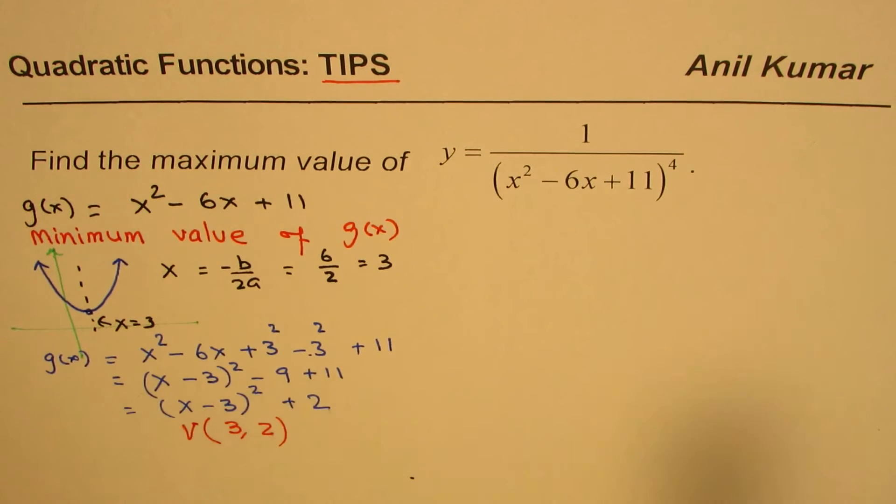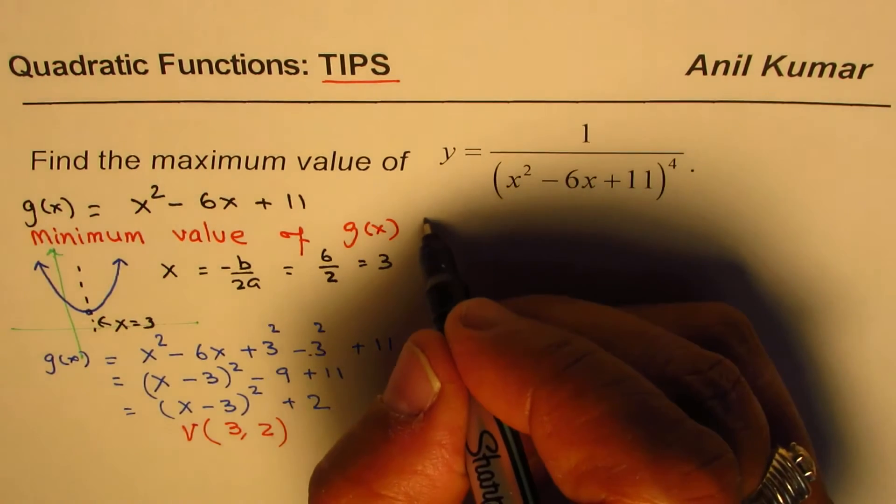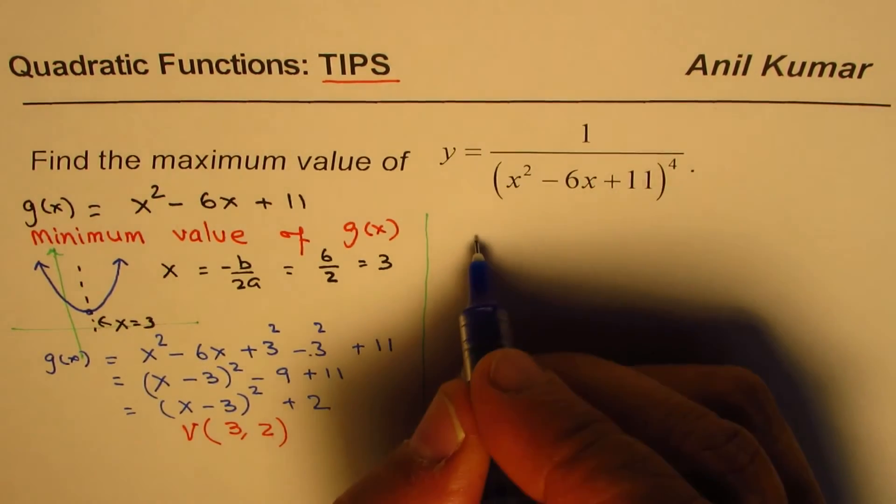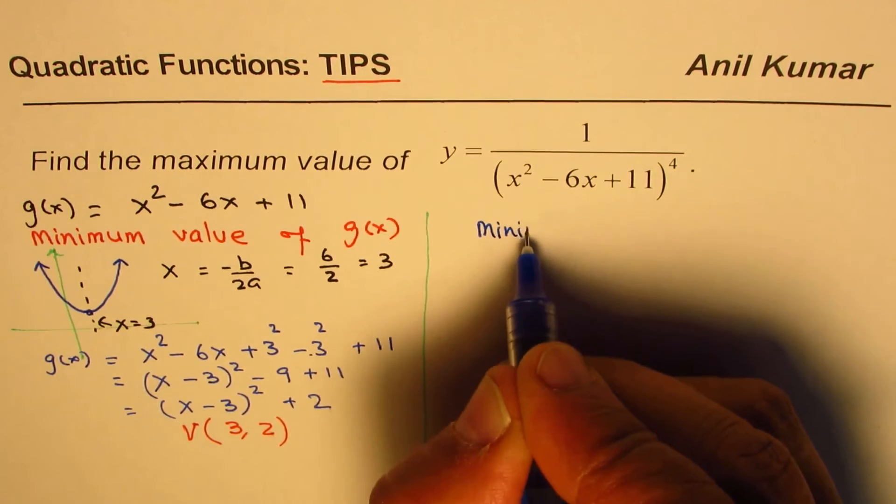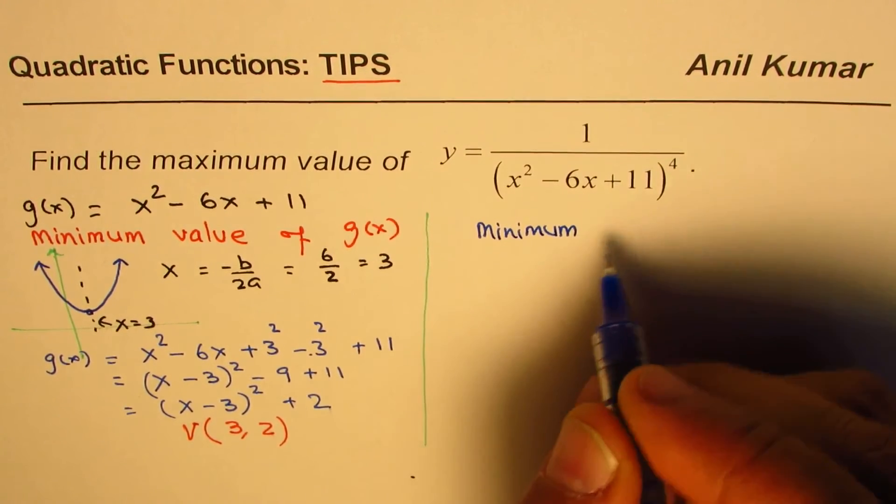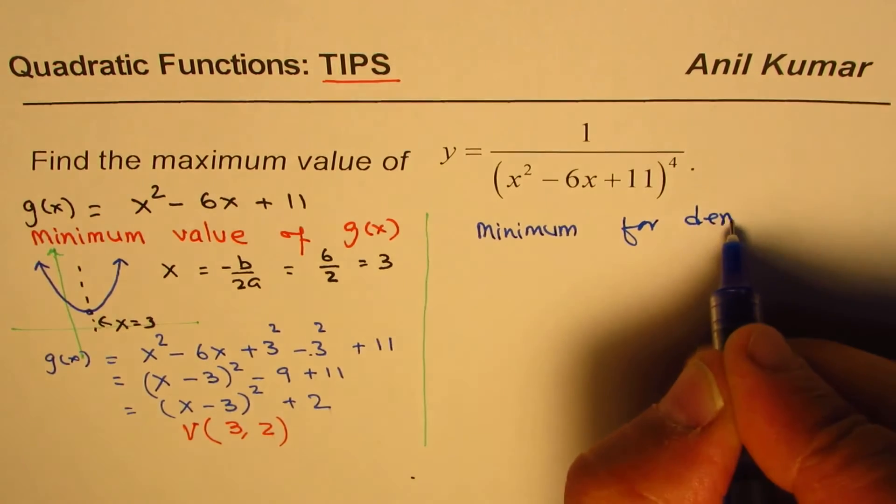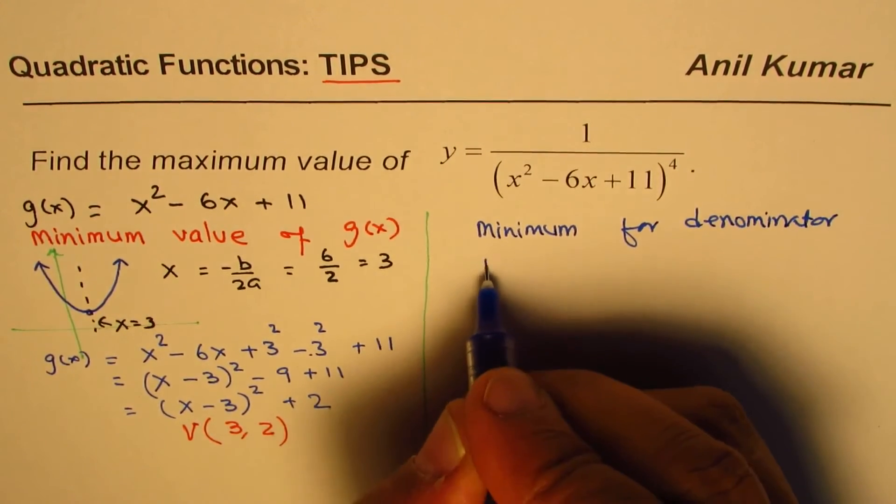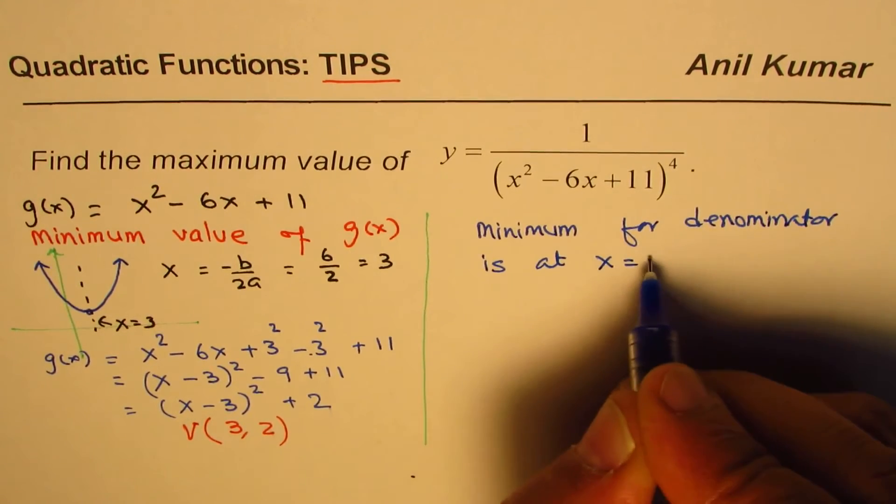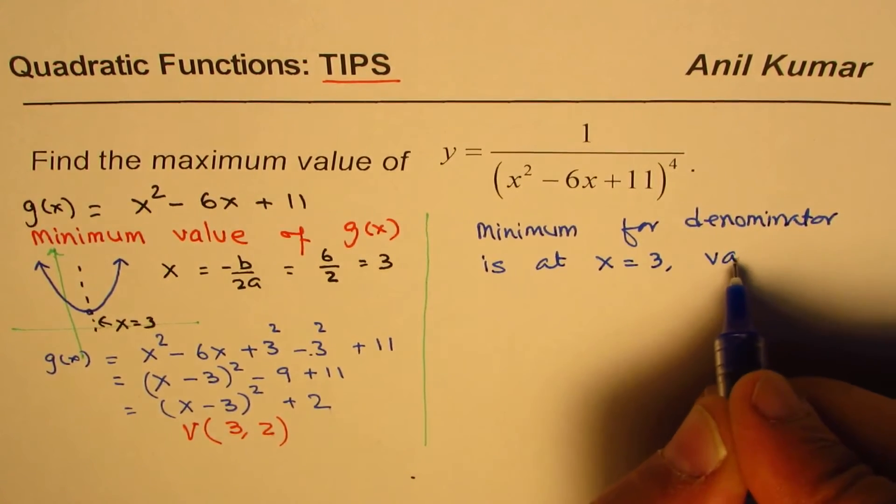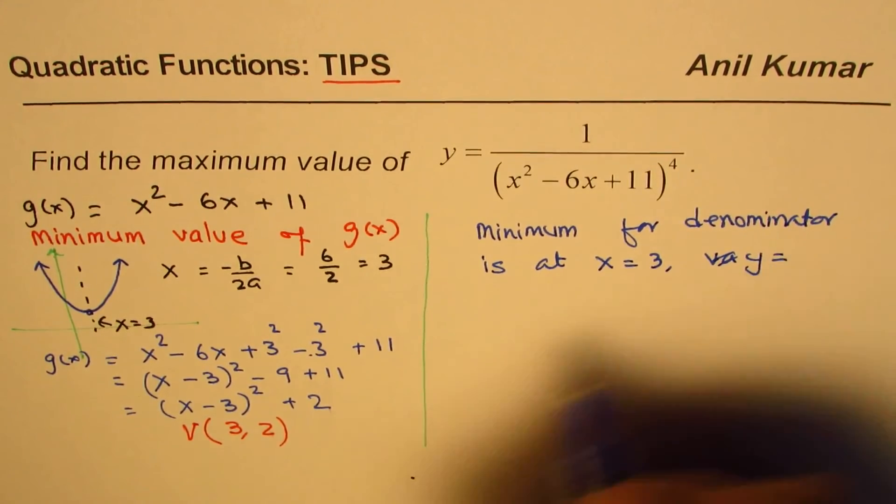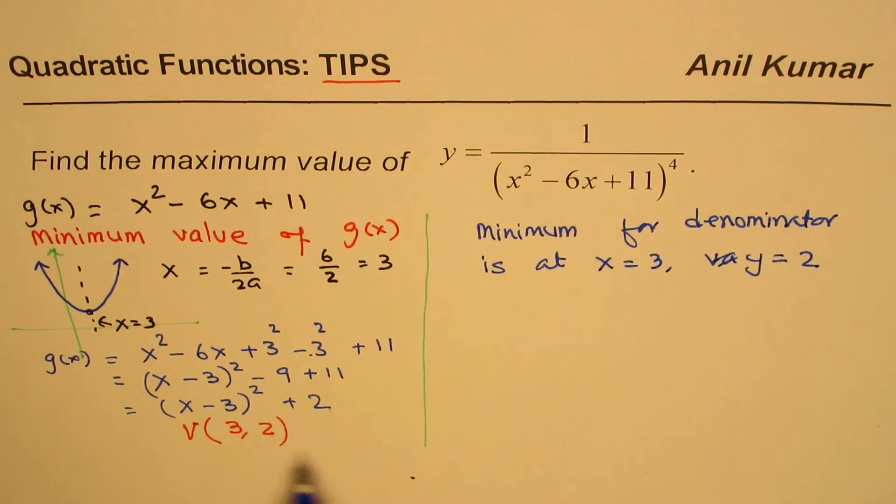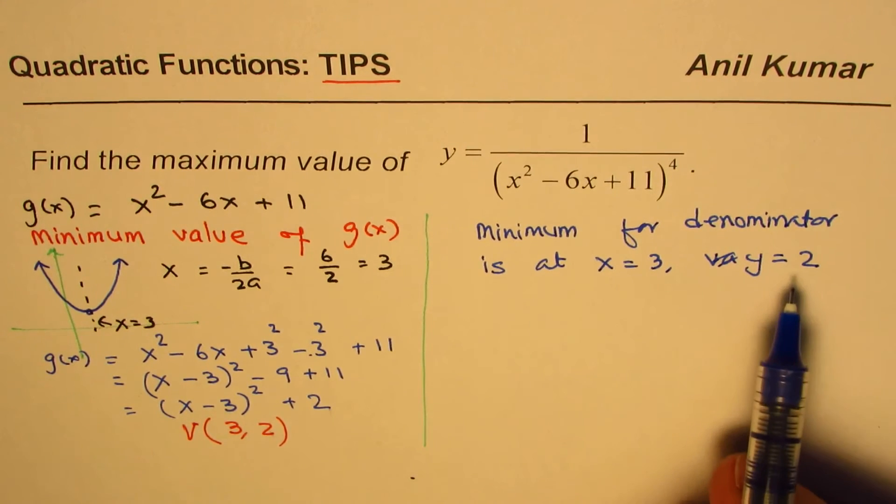So, the minimum value of this function, as you have seen, is 2. And that is at 3. So, we get minimum for denominator is at x equals to 3. And the value is, or you can say y equals to 2. So, for that, g of x in our case, the point is 3, 2. So, that is the minimum value.